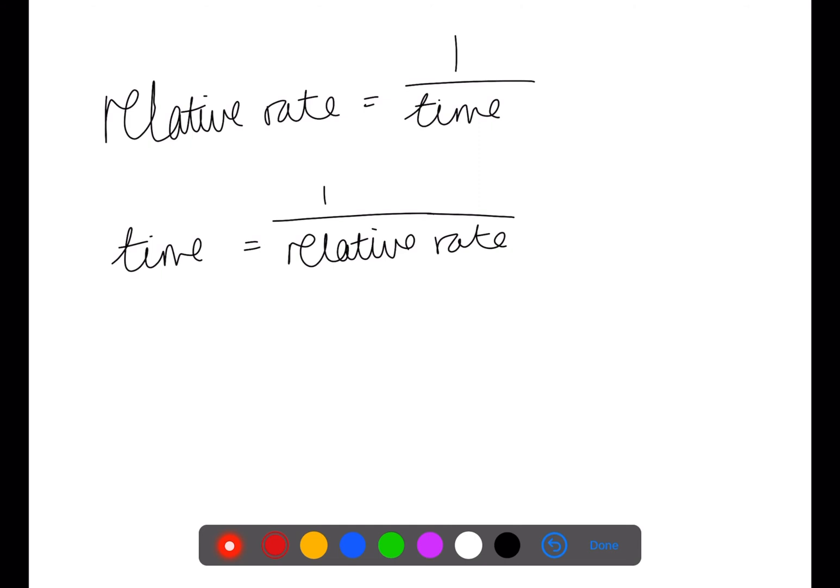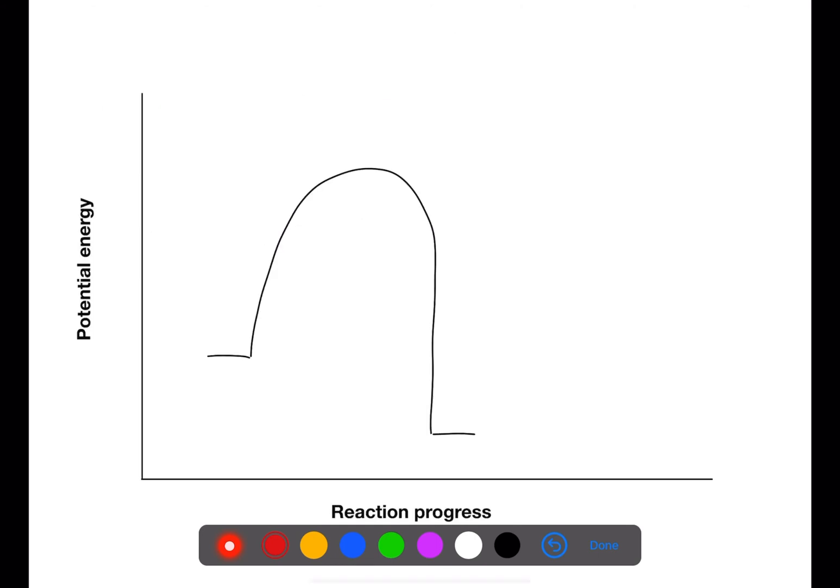This graph shows the potential energy for a reaction in progress going from reactants to products. We can calculate the enthalpy change for the reaction by taking the enthalpy at the products minus the enthalpy at the reactants. That will give us this value here. The enthalpy change for the reverse reaction will have the same value but the sign will be changed.